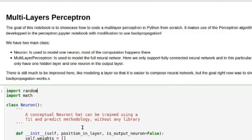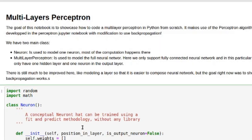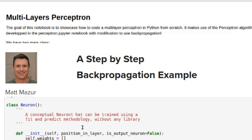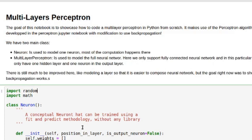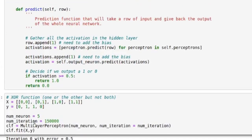We're going to try to learn the XOR function, and we're going to use the delta technique for the backpropagation implementation. In the description I've linked a very good tutorial for the derivation of what we're going to be using. So let's start from the bottom — the XOR function has four inputs and those are the Y's: it's one or the other but not both.